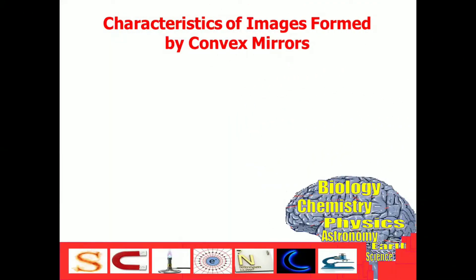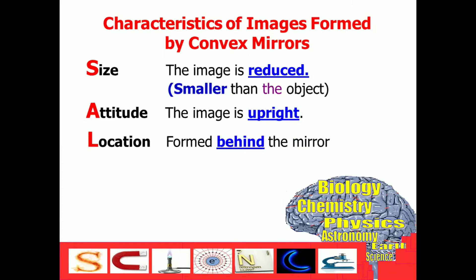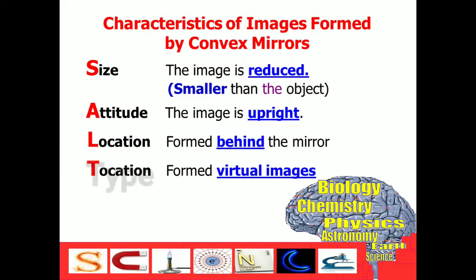This time, let us discuss the characteristics of the images formed by a convex mirror. The size of the image formed is always reduced — it is smaller than the object. The attitude or orientation is always upright. Its location is formed behind the mirror, and once the image is formed behind the mirror, it will form a virtual image. You have to take note that the images formed by a convex mirror in all cases always have these characteristics.